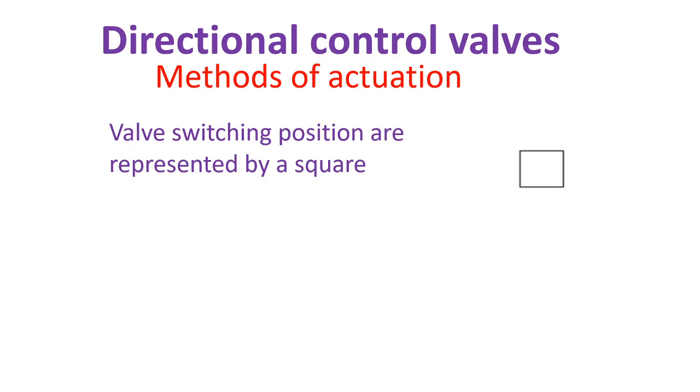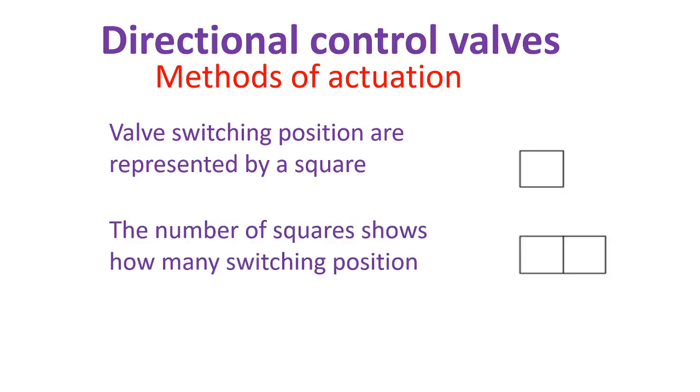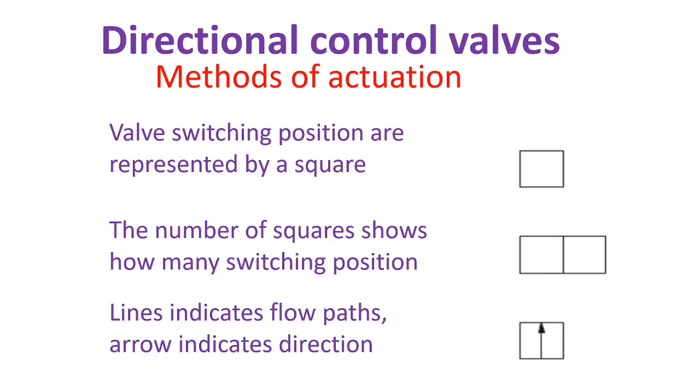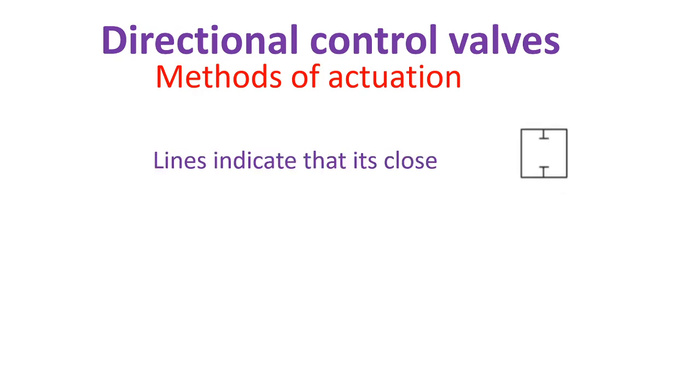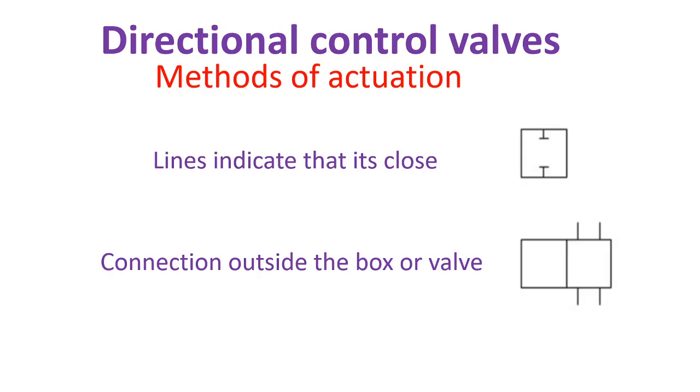Valve switching positions are represented by a square. The number of squares shows how many switching positions. Lines indicate flow path. Arrows indicate direction. Lines indicate that it is closed. Connection outside the box or valve.